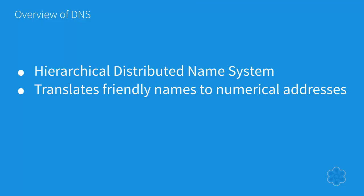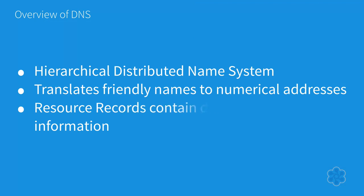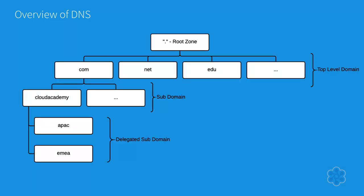The domain name space consists of a tree of domain names, with each node or leaf of the tree holding one or more resource records, which contain information associated with the domain. If we look at a domain — and for the purpose of this we will use Cloud Academy's domain, which is cloudacademy.com — a key point to remember is that when determining the hierarchy of domains, they descend from right to left, and each label to the left specifies a subdivision or subdomain to the right.